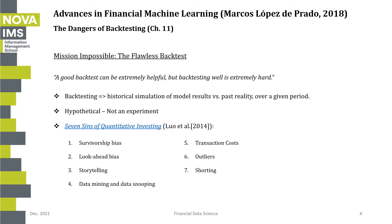We start off the chapter with Mission Impossible: the Flawless Backtest. A good backtest can be extremely helpful, but backtesting well is extremely hard. Backtesting, to put it simply, is a historical simulation of model results versus past reality over a given period of time.